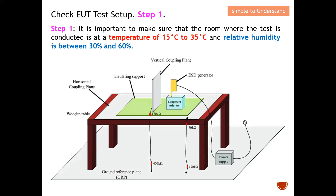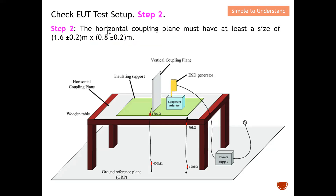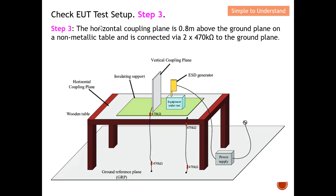Step number two: you need to check your horizontal coupling plane. As you can see here, it must have a size of at least 1.6 meters multiplied by 0.8 meters. You need to ensure your horizontal coupling plate meets this size requirement.